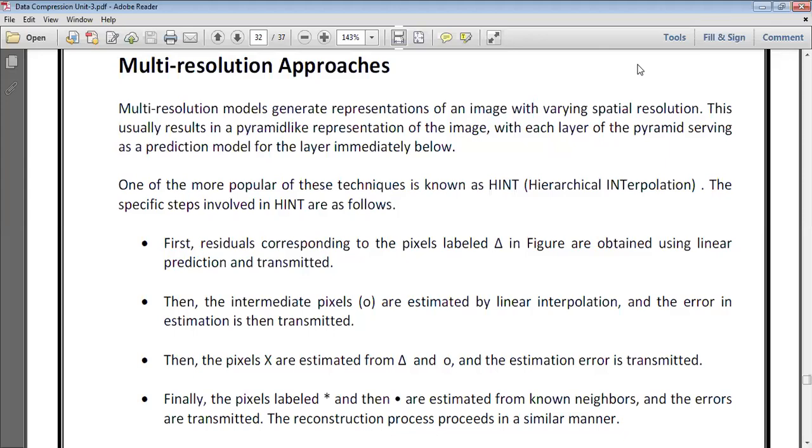And this usually results in pyramid-like representations, means we have created a tabular format in which we encode with the help of triangles, circles, dots, and stars. This usually results in the pyramid-like representation of the image, with each layer of the pyramid serving as a prediction model for the layer immediately below.